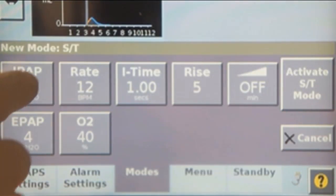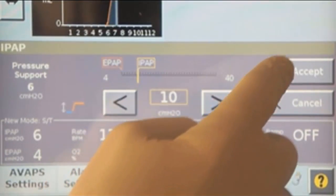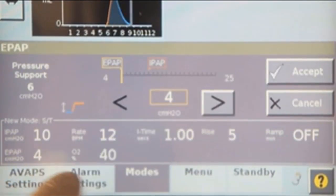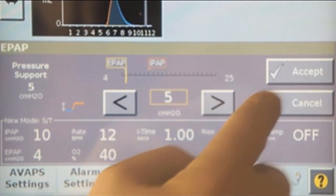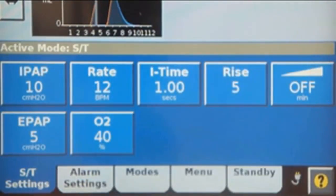Next, enter the initial settings. Start with low pressures and adjust upward as needed. If BPAP is being used, set the initial inspiratory and expiratory pressures to 10 and 5 centimeters of water respectively. Accept the settings to activate the mode.